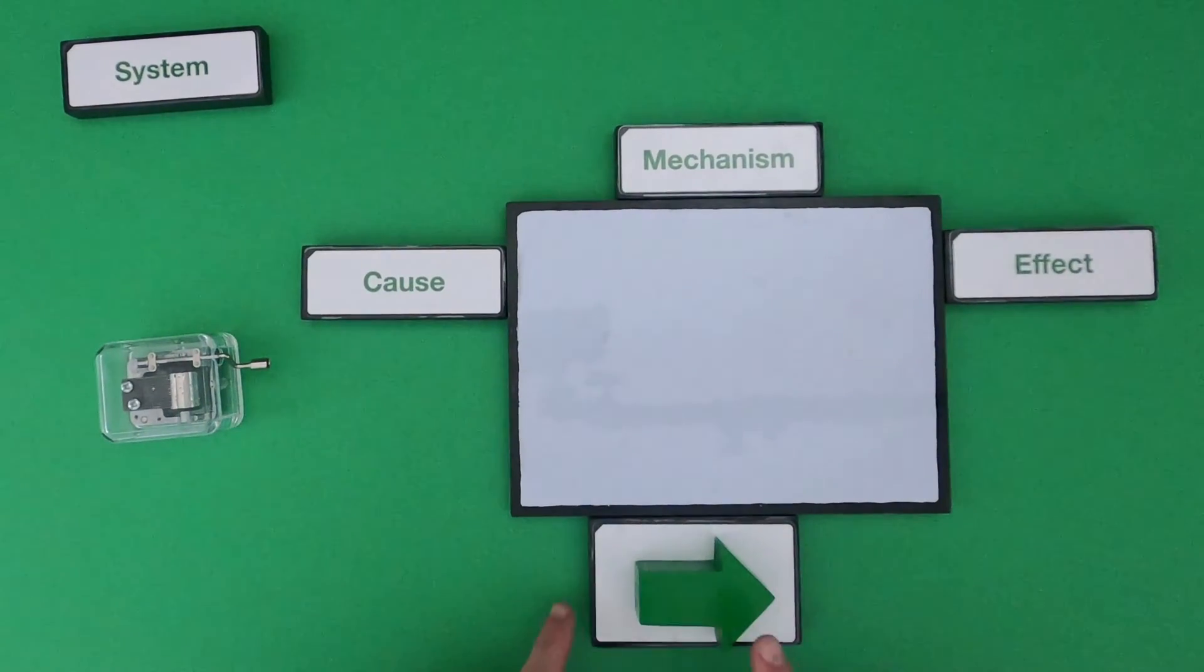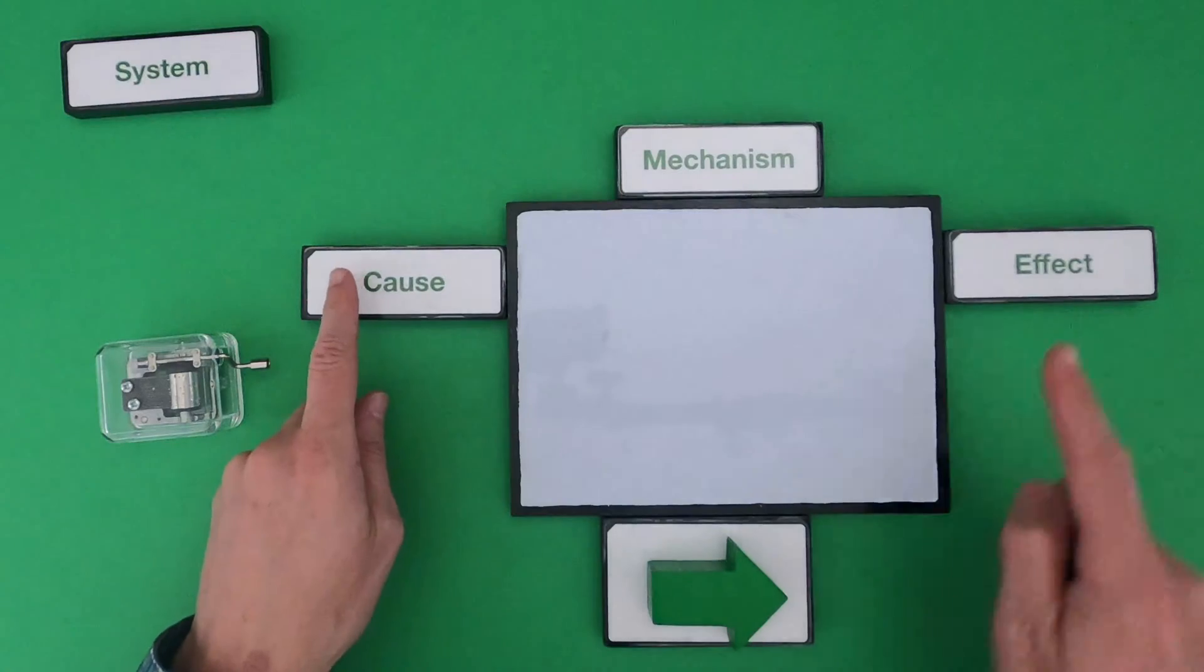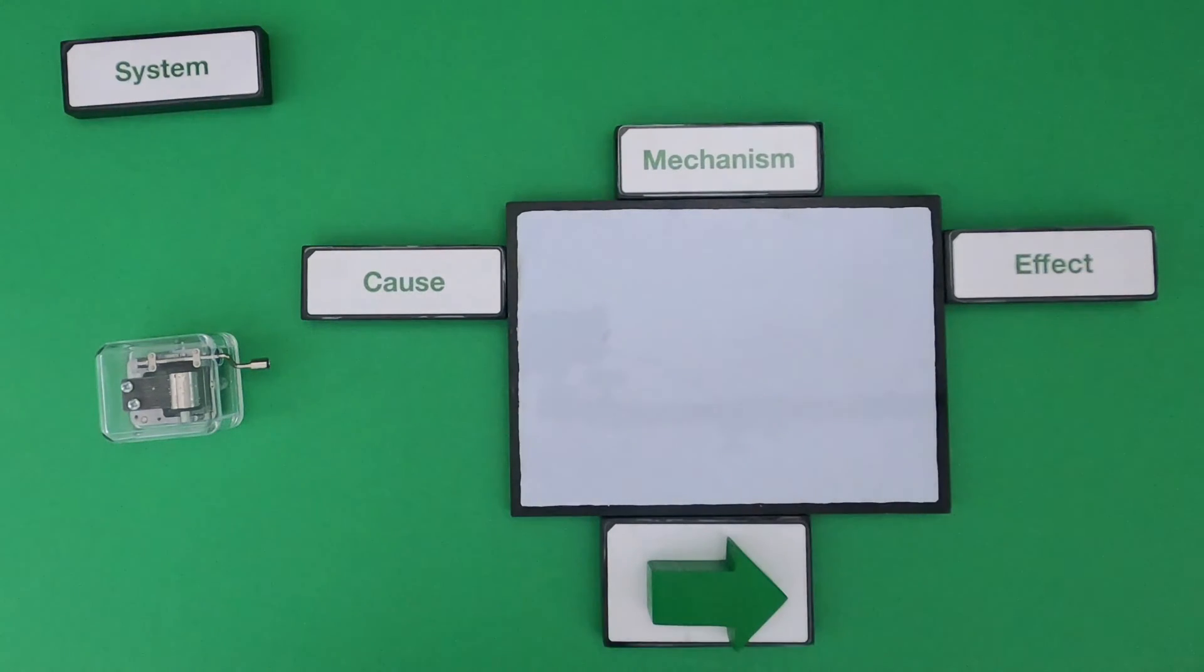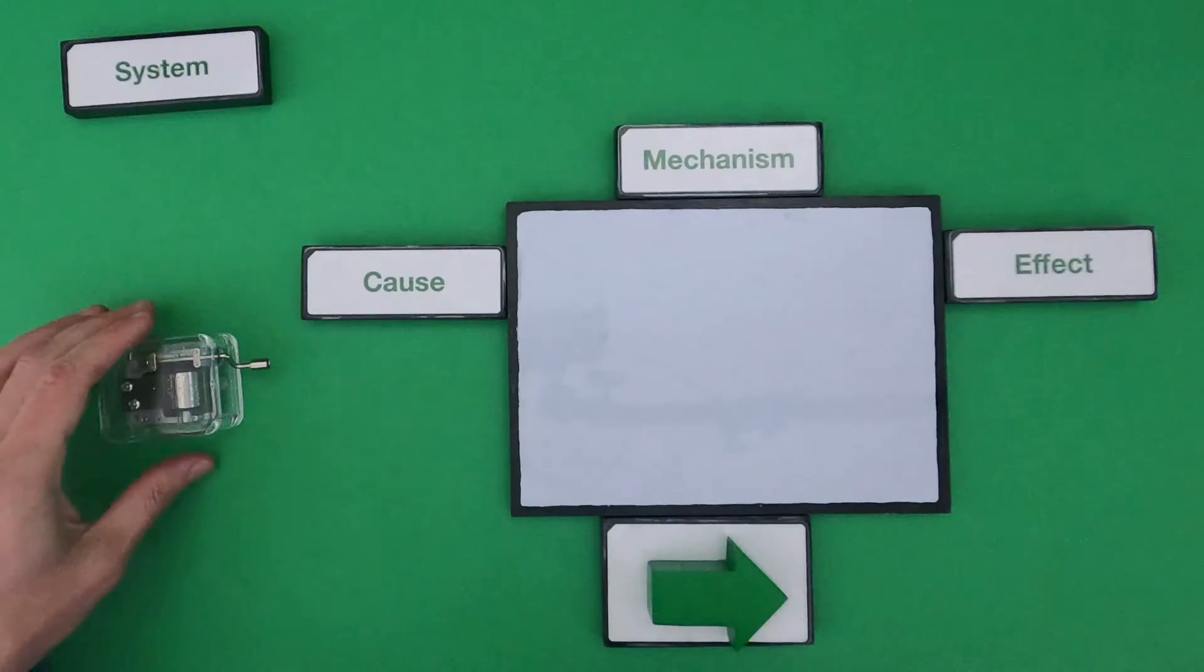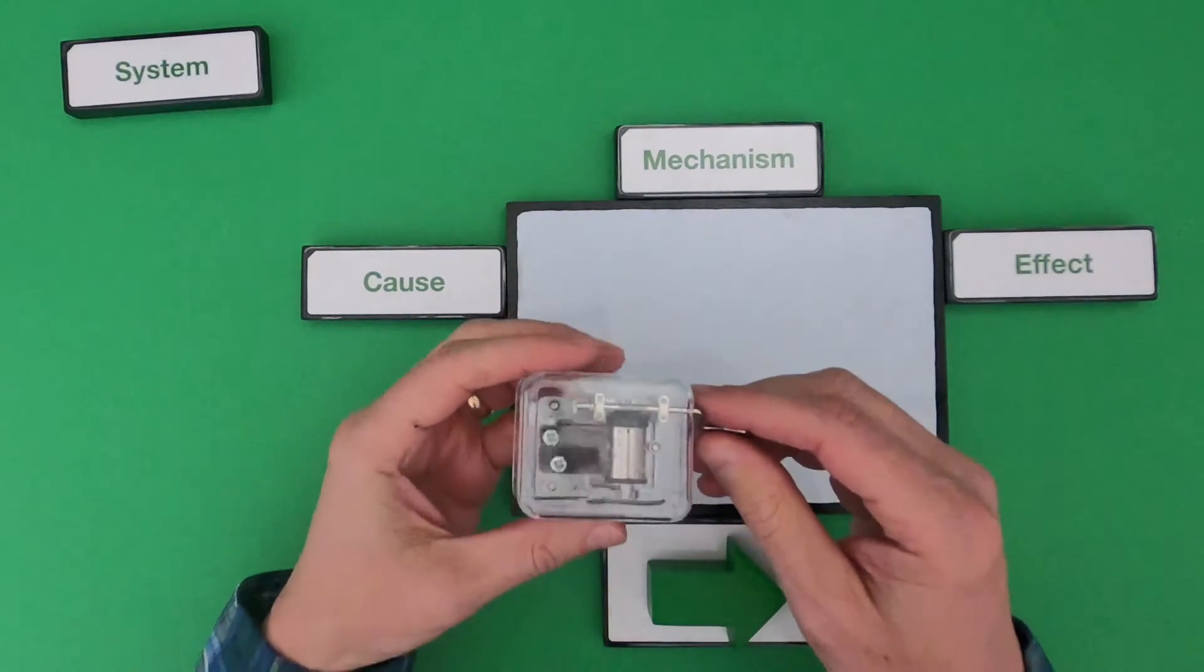So as we set it up this way, this is the causal relationship from cause and effect but we've just given ourselves a lot more room which is going to be the mechanism. What we're going to be digging into is a system called the music box.